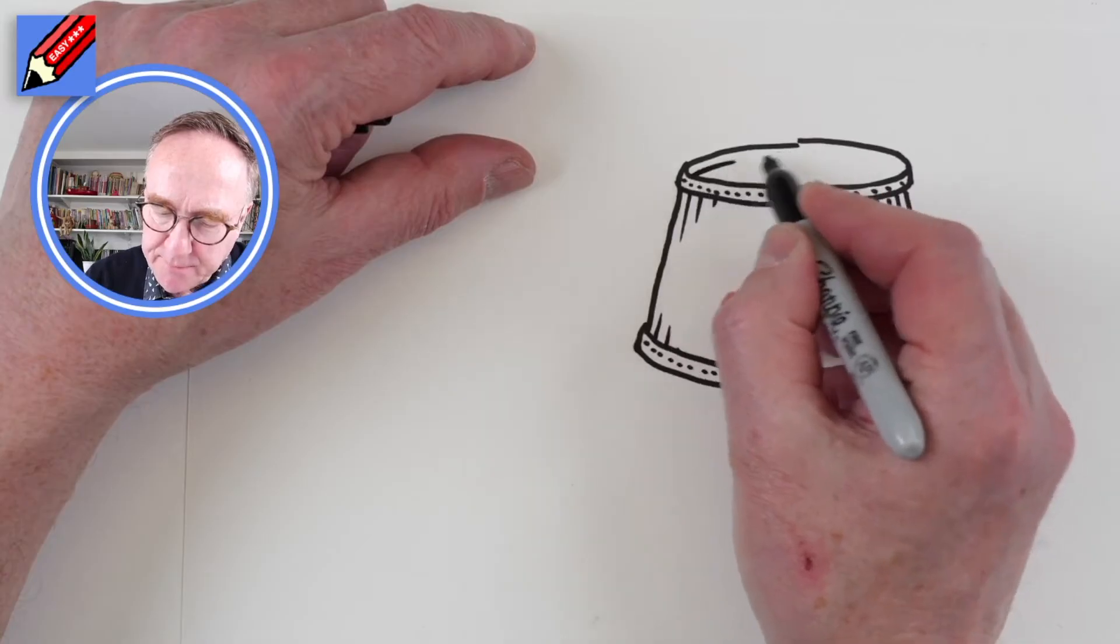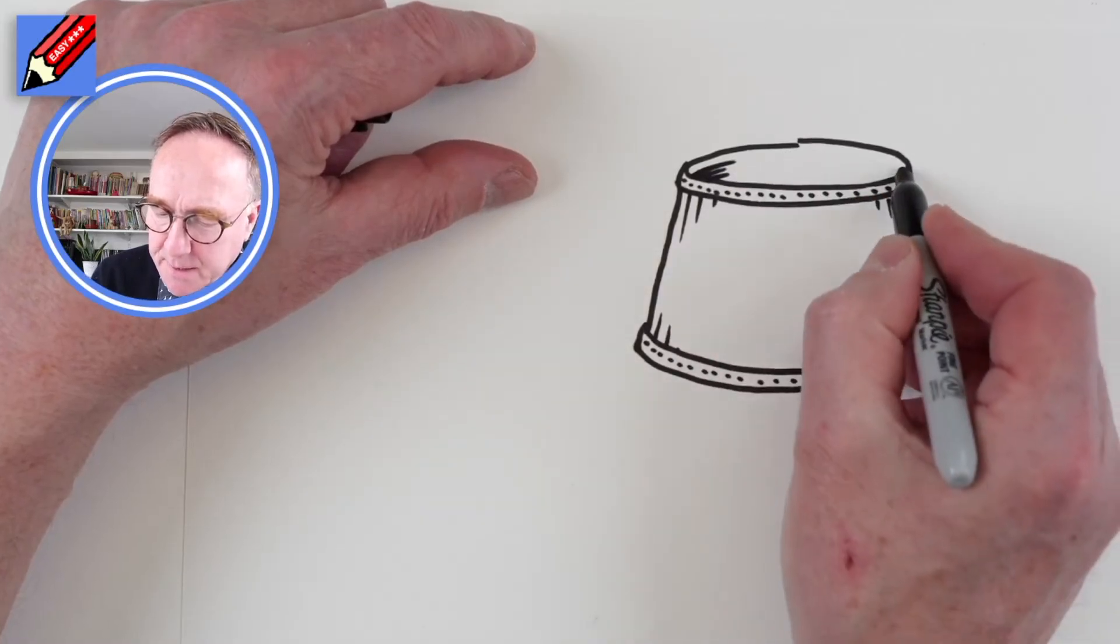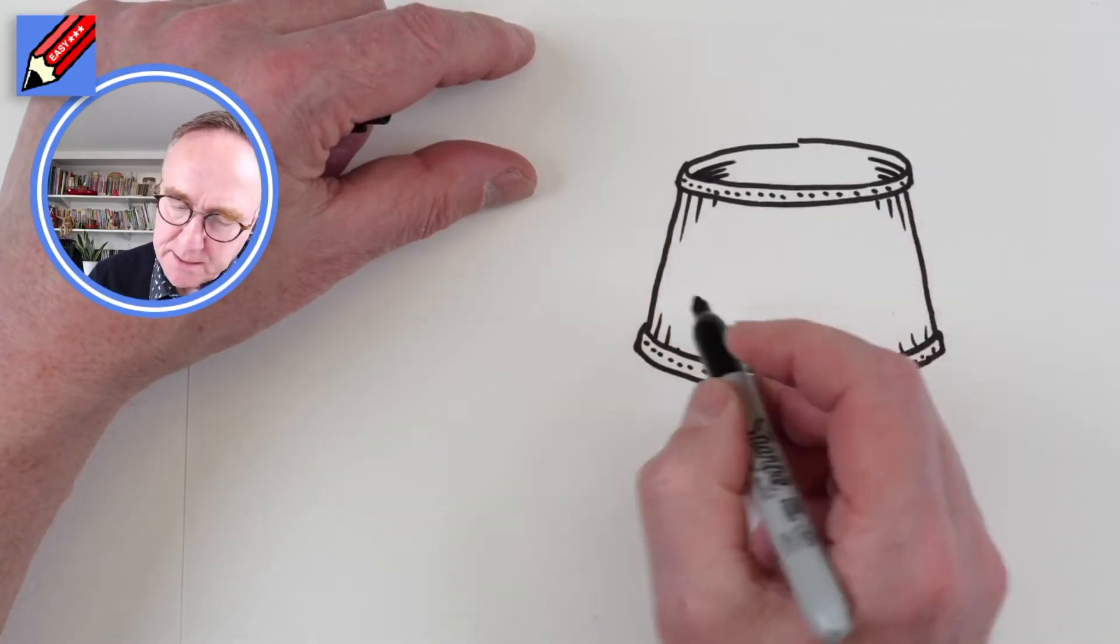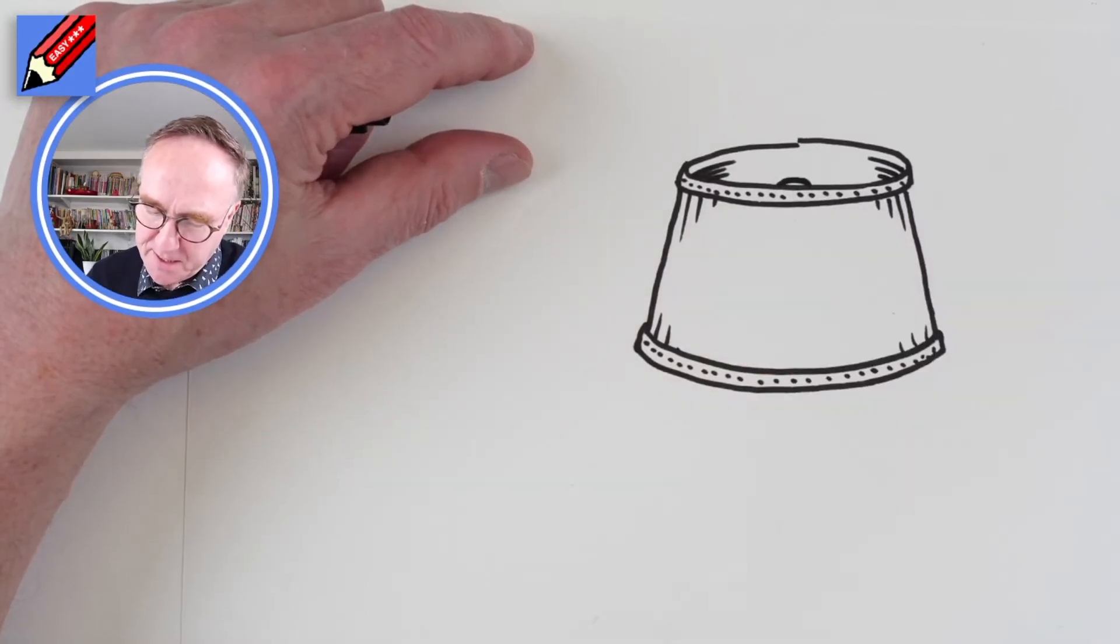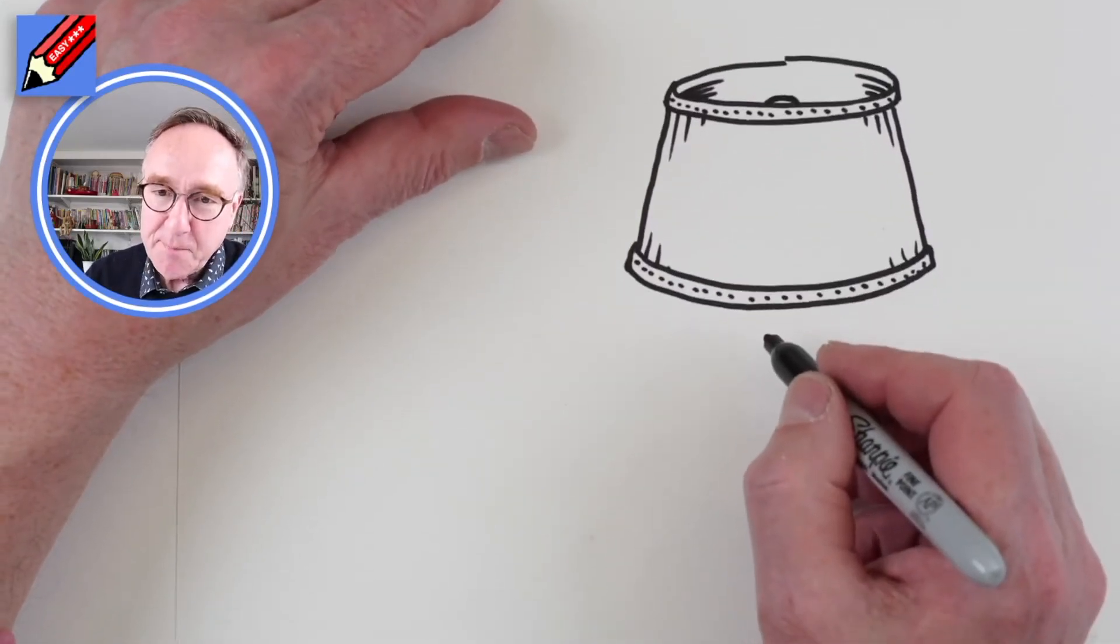And then here we want to have some little lines coming in like that, and you might just see the top of the light bulb in there. Let's move that up.